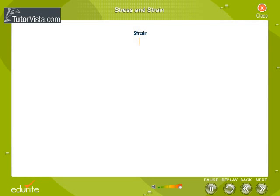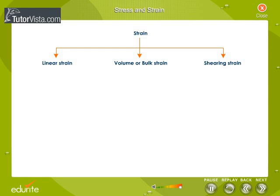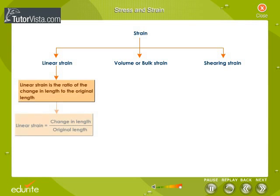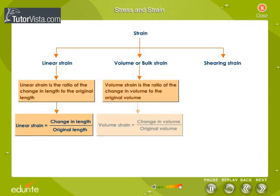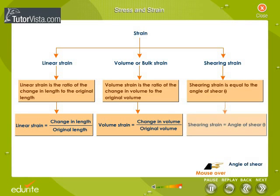There are three types of strain: linear strain, volume or bulk strain, and shearing strain. Linear strain is the ratio of the change in length to the original length. Volume strain is the ratio of the change in volume to the original volume. Shearing strain is equal to the angle of shear, theta.